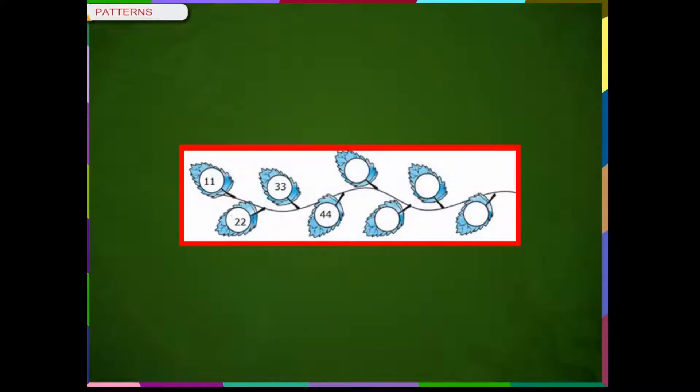Observe the screen and continue the pattern. We observe that the first number is 11. Thereafter, every next number is a multiple of 11. So, the rule is multiple of 11. Using the rule, the pattern will continue with numbers 55, 66, 77 and 88.